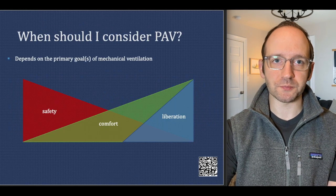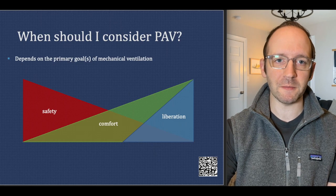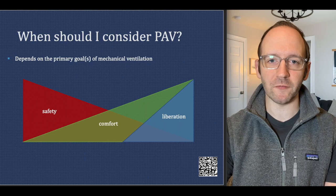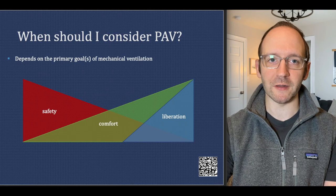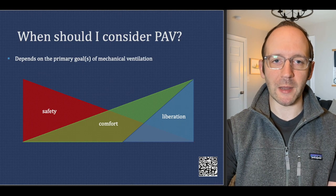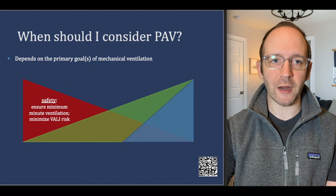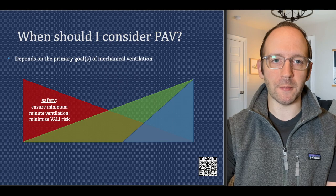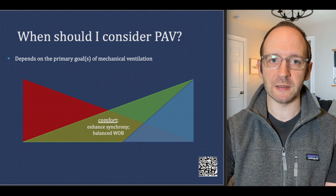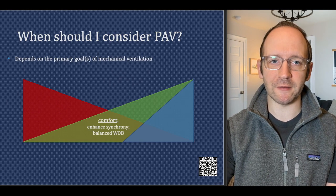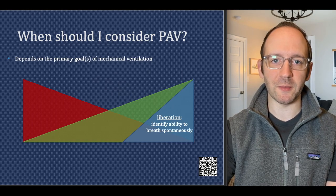When should PAV be considered? It really depends on what the primary goal of mechanical ventilation is for the patient at the time you're assessing them. The paradigm we use is called safety, comfort, and liberation. All these goals are important at different points in the patient's mechanical ventilation journey, but your predominant goal should dictate what kind of modes and behaviors you enact. When safety is the priority, we're trying to ensure a minimum minute ventilation and minimize ventilator-associated lung injury risk. When comfort is the priority, we're trying to enhance synchrony and balance work of breathing. And a goal of liberation allows us to identify the ability to breathe spontaneously.